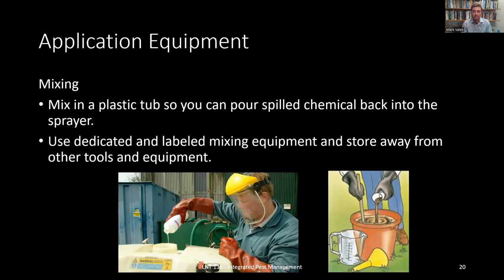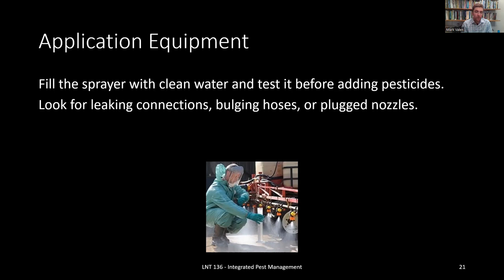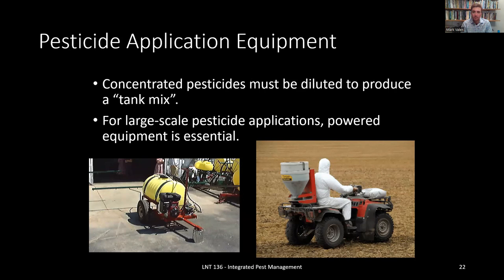Before you put pesticides into the equipment, fill the sprayer with clean water and test it before adding pesticides. You can therefore look for any leaking connections, any bulging hoses, or any plugged nozzles. If you don't do this and you put the chemicals directly in and then see a problem, now you have to deal with it and you have extra chemical that you don't know what to do with. So first fill your equipment with water, give it a test, and if that works well then go ahead and continue with the chemical pesticide. When you dilute concentrated pesticides in a commercial application, this is called a tank mix, because you're really mixing it right there in the tank where you're applying. And if you're on a very large scale, you may even utilize powered equipment — either a powered sprayer run by a pump, or an ATV with a container on the back, where the applicator uses a powered tractor or car to drive around and apply the pesticide over a broad area.